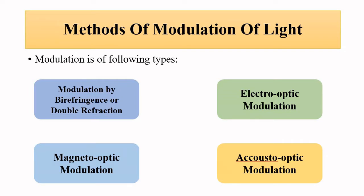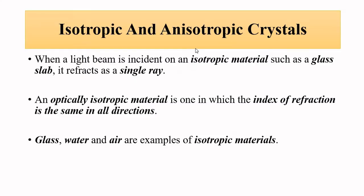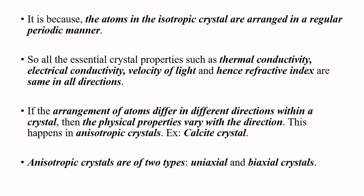Double refraction happens in a birefringent crystal material. The important characteristic of that crystal material is that it is anisotropic in nature. There are two types of materials: isotropic and anisotropic. In isotropic materials, the crystal properties such as conductivity and refractive index are uniform — they are the same in all directions.